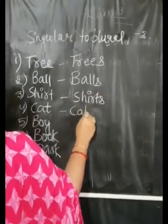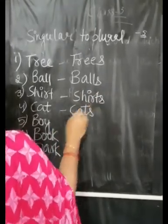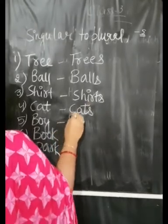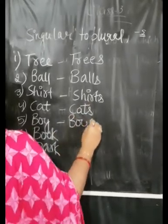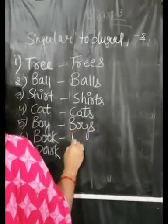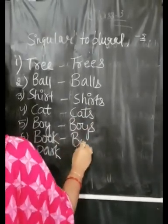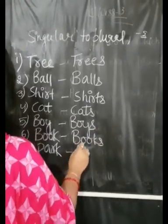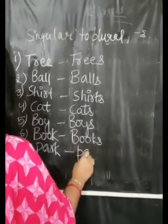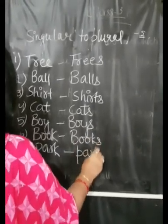Continuing with Rule 1 — adding S: cat becomes cats, boy becomes boys, book becomes books, park becomes parks.